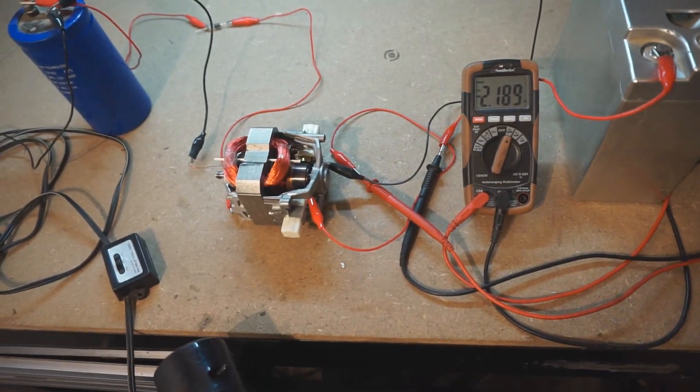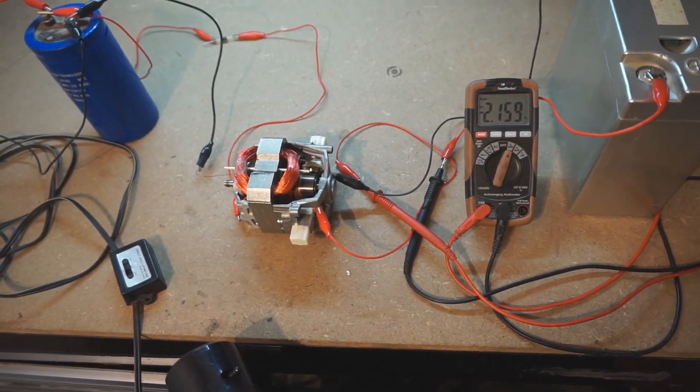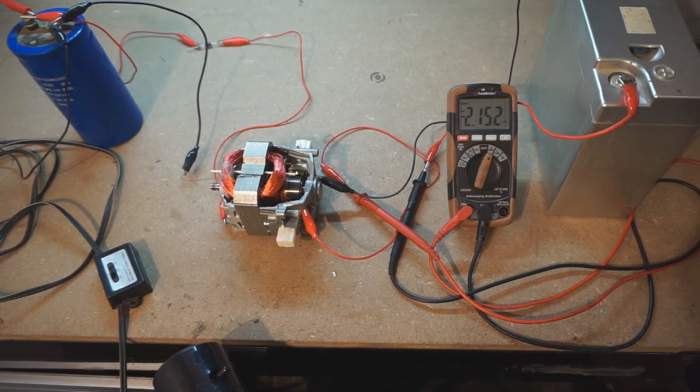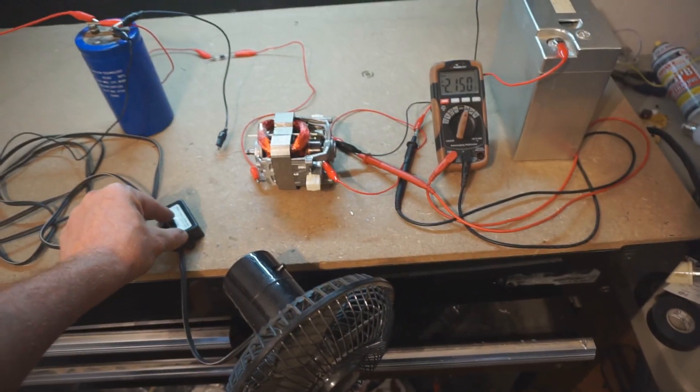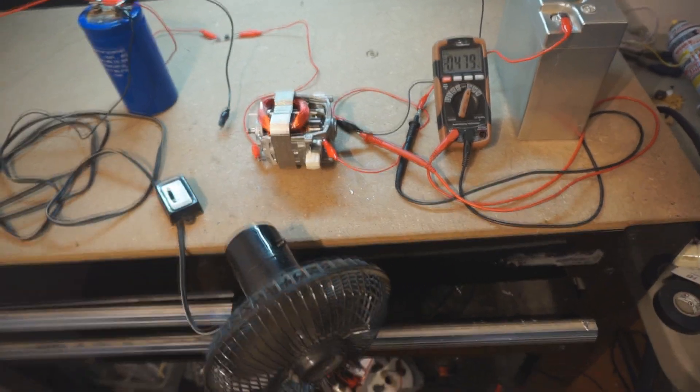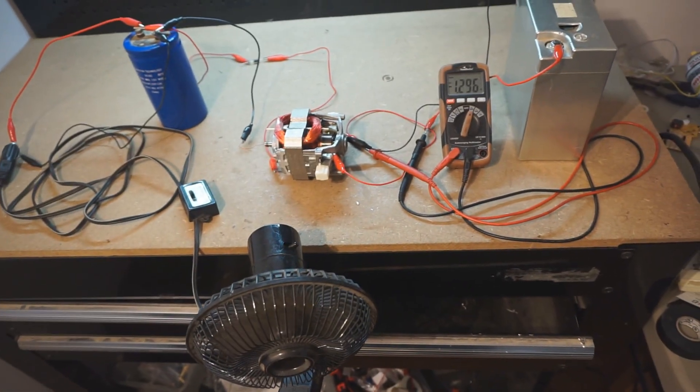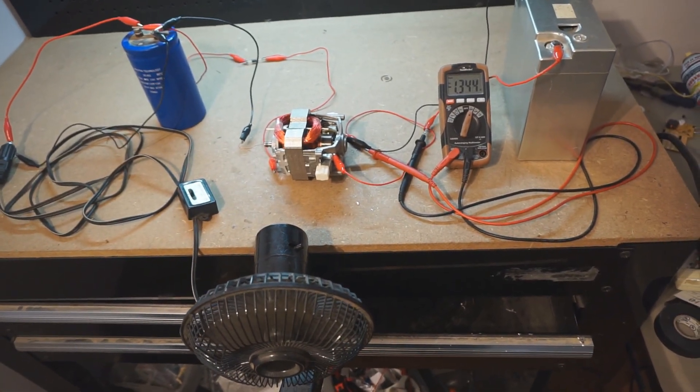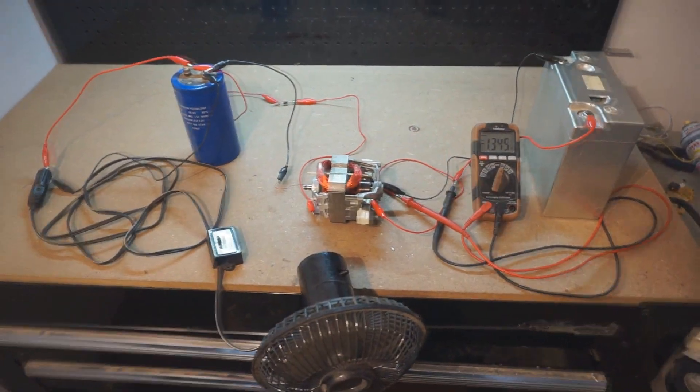I'm going to turn the fan back off, the RPM increases and the current draw goes up. It's going to go back to about 2.2 amps. Turn the fan back on, nice dip in current draw. It goes down to about 1.3 amps.